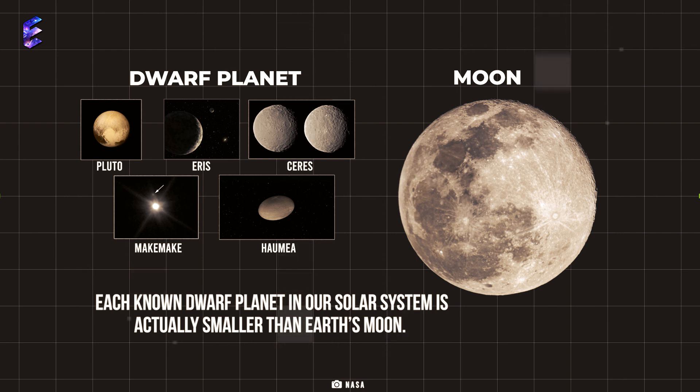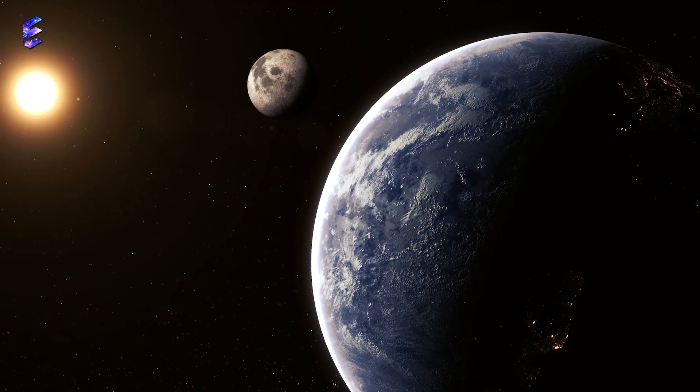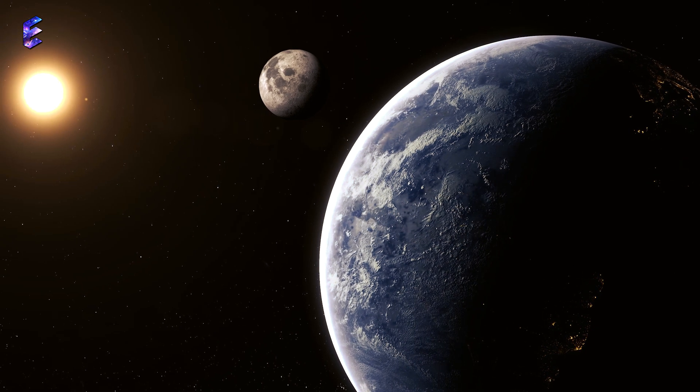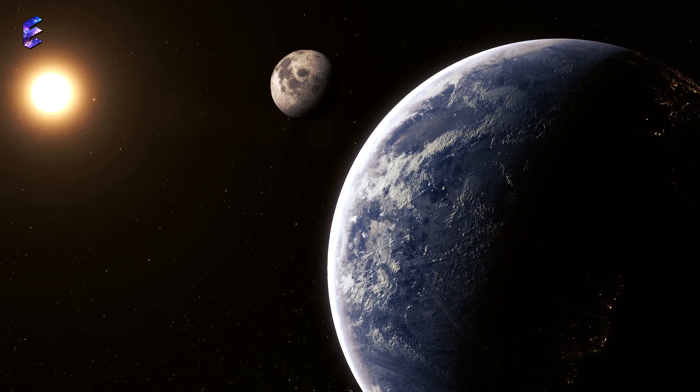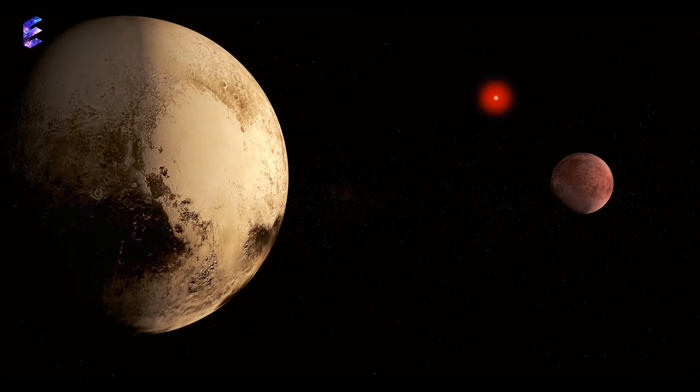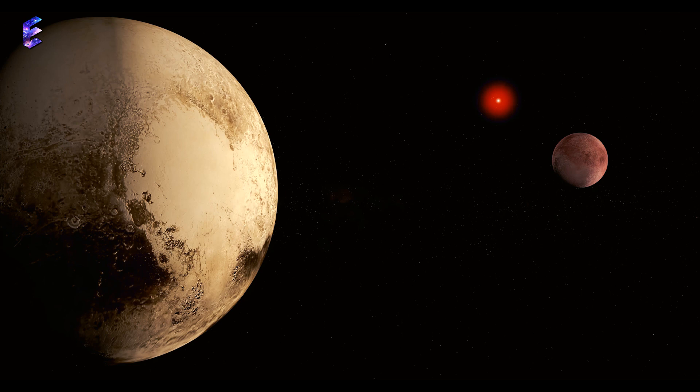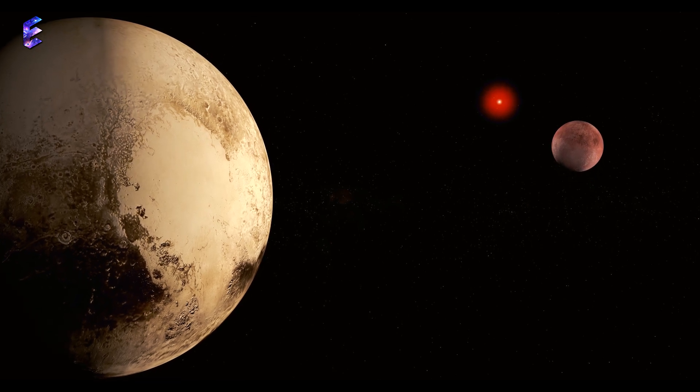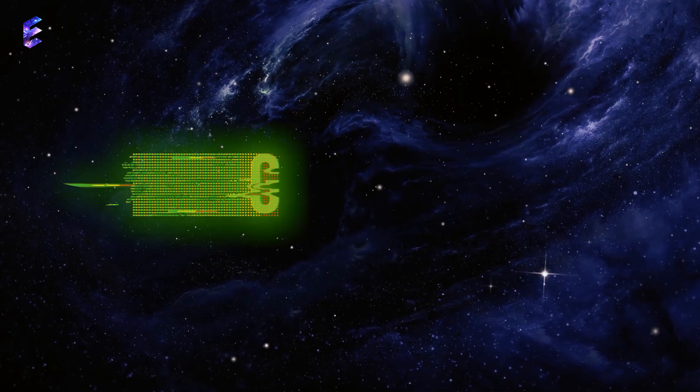Fun fact: each known dwarf planet in our solar system is actually smaller than Earth's moon. Our moon is less than a third of the width of Earth with a radius of about 1,080 miles. So in the current scenario, there may exist hundreds and thousands of dwarf planets in the solar system.